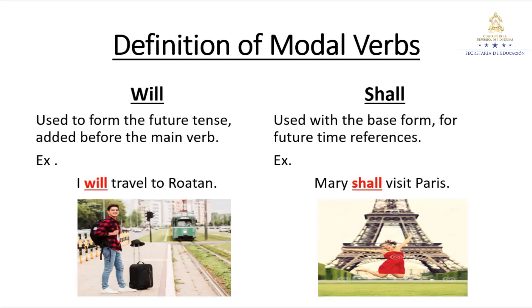And finally, I have the definition of 'will' and 'shall.' Will is used to form the future, placed before the main verb. For example: I will travel to Roatan — meaning the travel will happen in the future. Shall is also used with the base form for future time references. For example: Mary shall visit Paris. Shall is more formal than will and is not commonly used any longer.